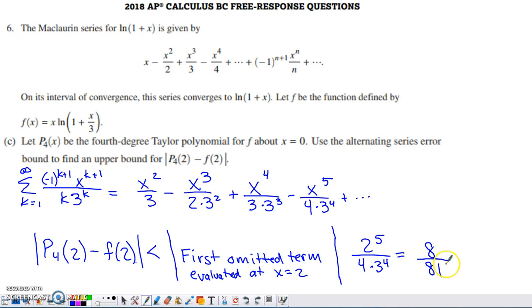The first omitted term would be this term right here. When I evaluate that term at 2, I end up with this. If you simplify that, you get 8 over 81. This would be enough to get you credit for part C. Just pay attention to how your teacher wants you to specify your answers. If you're on the AP exam, you can definitely leave it unsimplified. The first omitted term, the absolute value of that, is equal to this fraction right here.